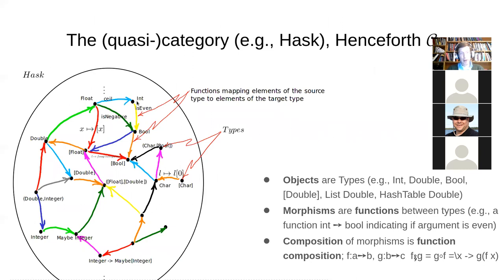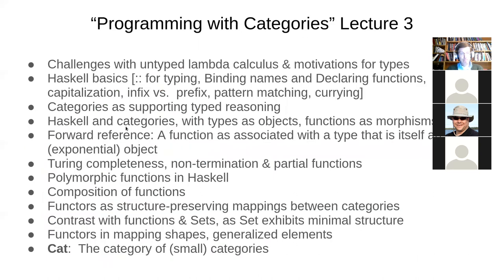Haskell is often characterized by this category Hask, which has types as objects and functions as morphisms. Here we have types, and between those types are arrows or morphisms, which here are functions. A function between int and bool might be 'is even'; between float and bool might be 'is negative'; between float and int might be 'ceiling', which takes a floating point value and converts it into an int.